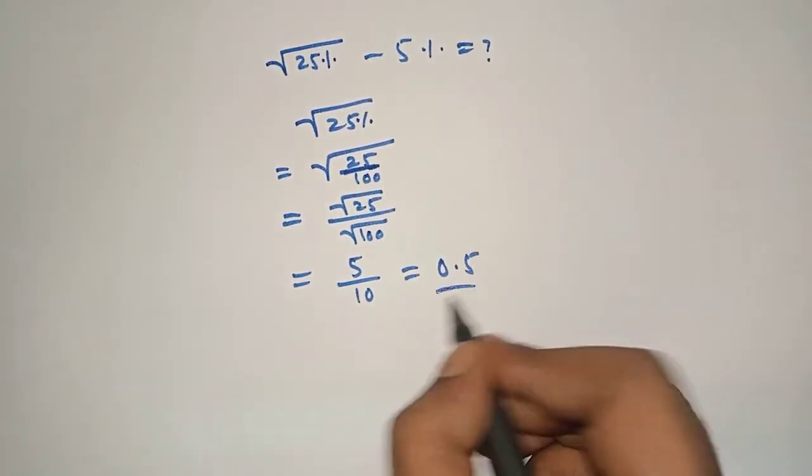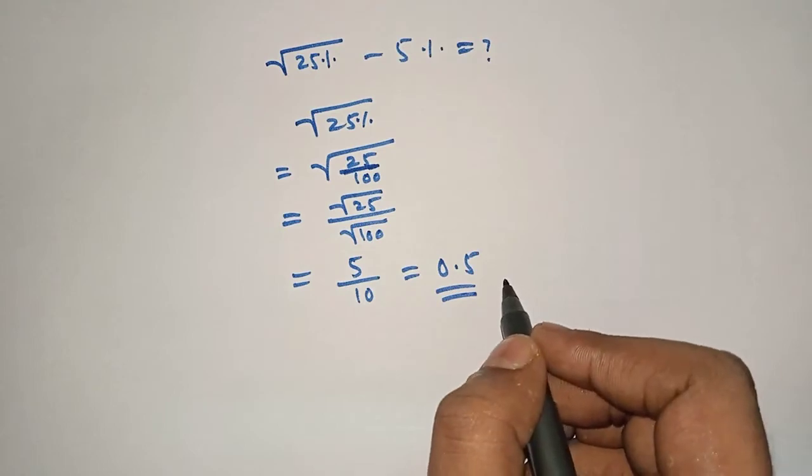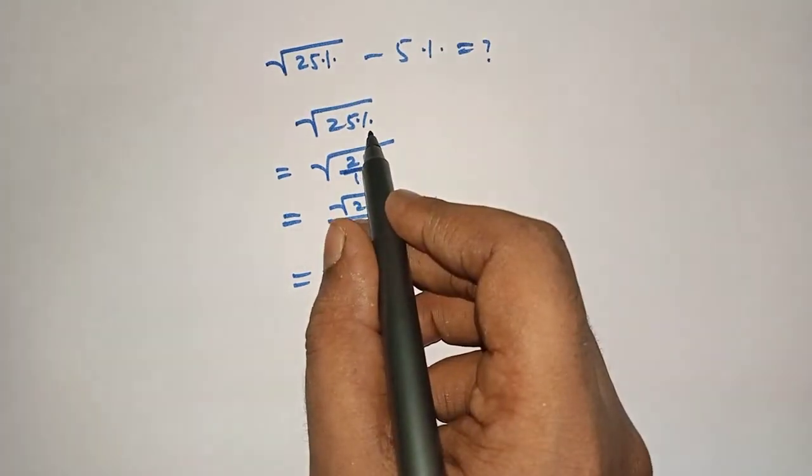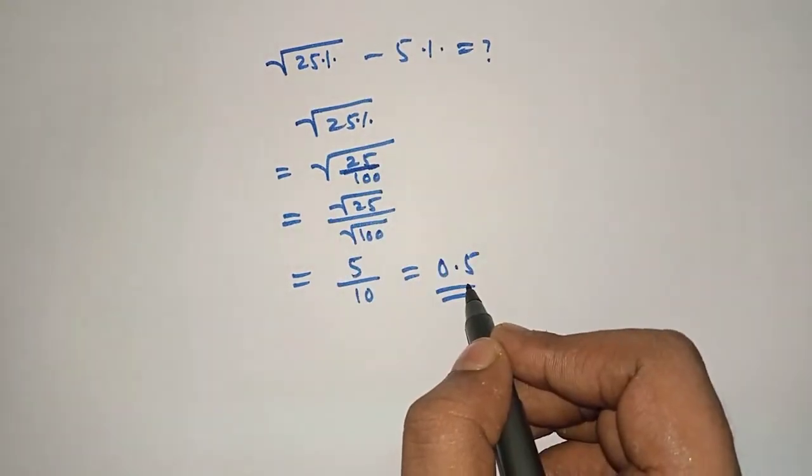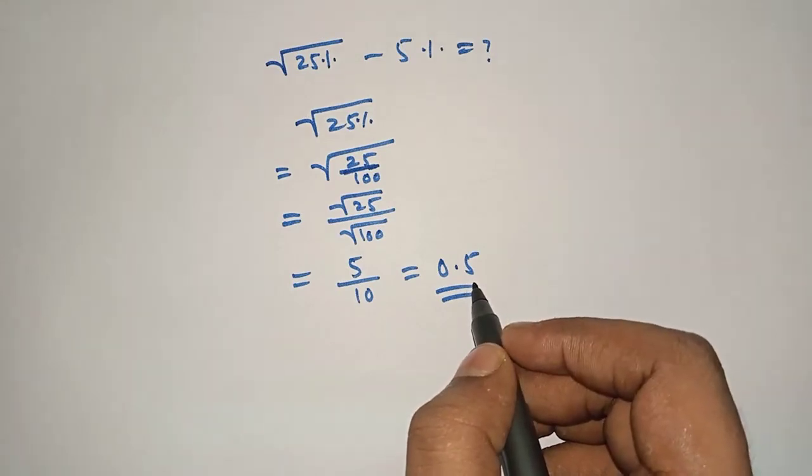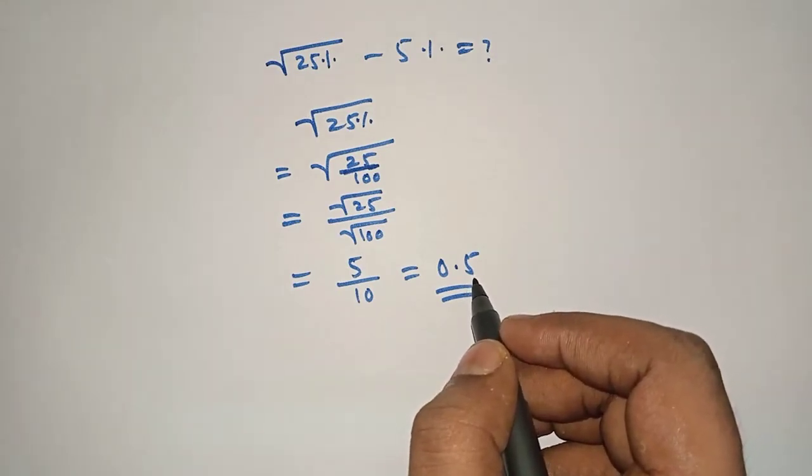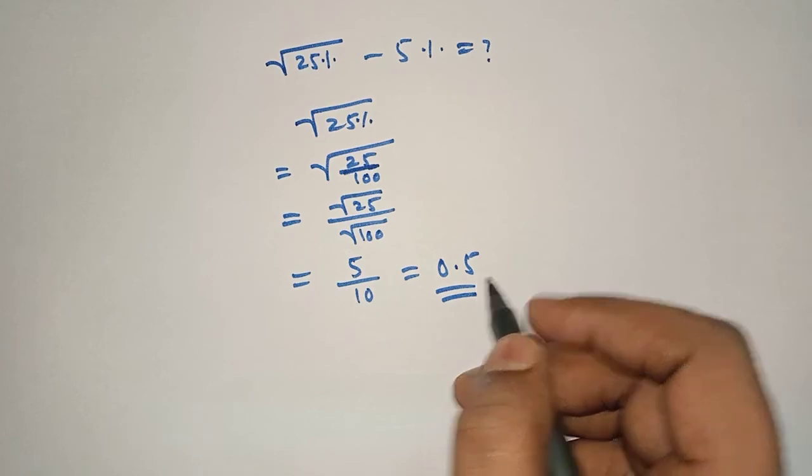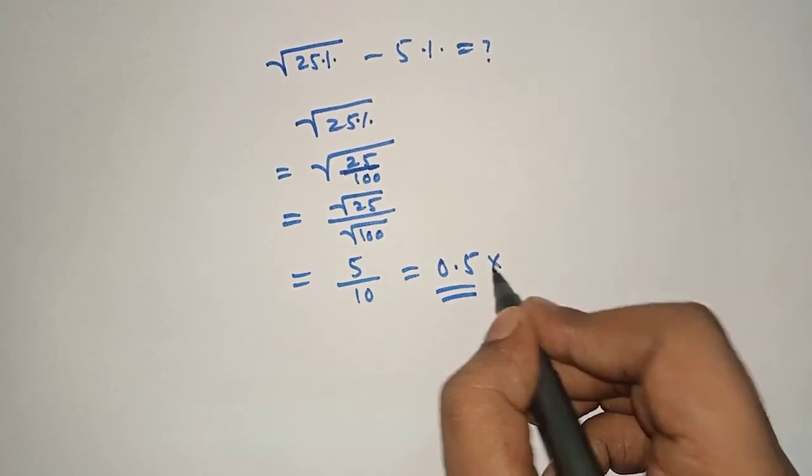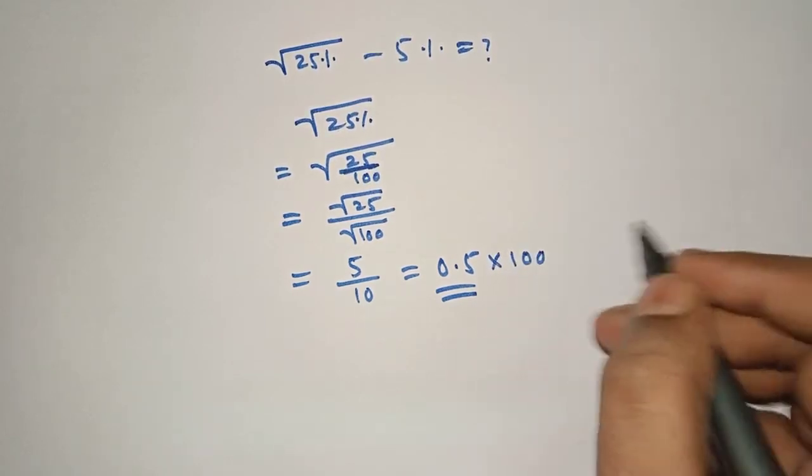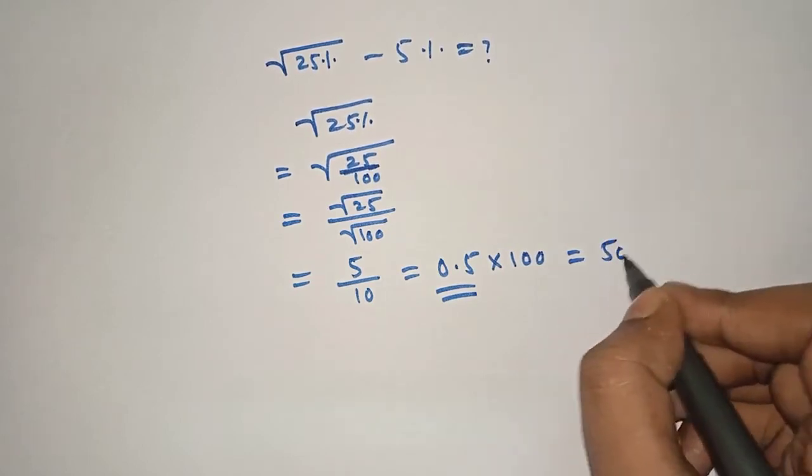It is a number, not percentage, because we have removed the percentage sign. So we have to make it percentage. What we have to do? Multiply by 100. Now this will be 50%.